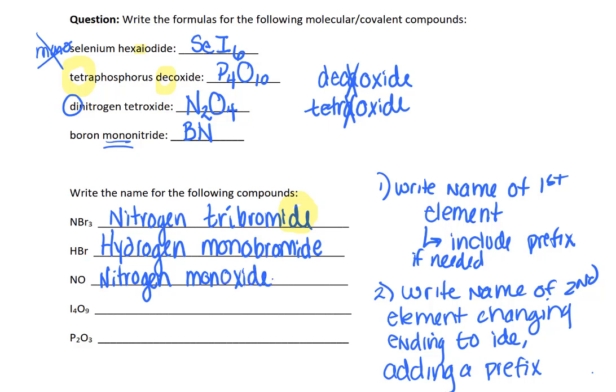The next one is iodine, and there's four of them, so tetraiodine, and then nine oxygens, nonoxide. Remember that non is really nona, and I'm dropping the A of nona and then putting in the oxide.